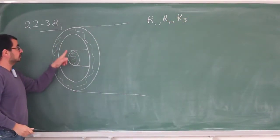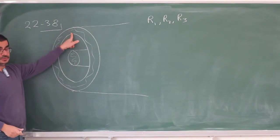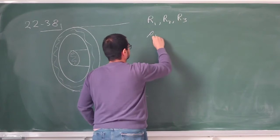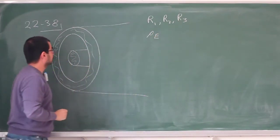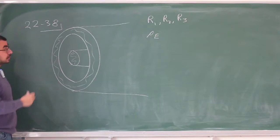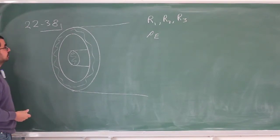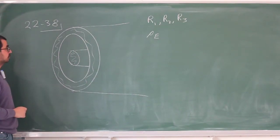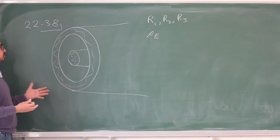Both the cylindrical rod and the cylindrical shell have uniform charge densities of rho. From that, you can immediately tell that these are actually insulators, because otherwise everything would accumulate to the surface. Since the charge is uniformly distributed, these must be insulators.